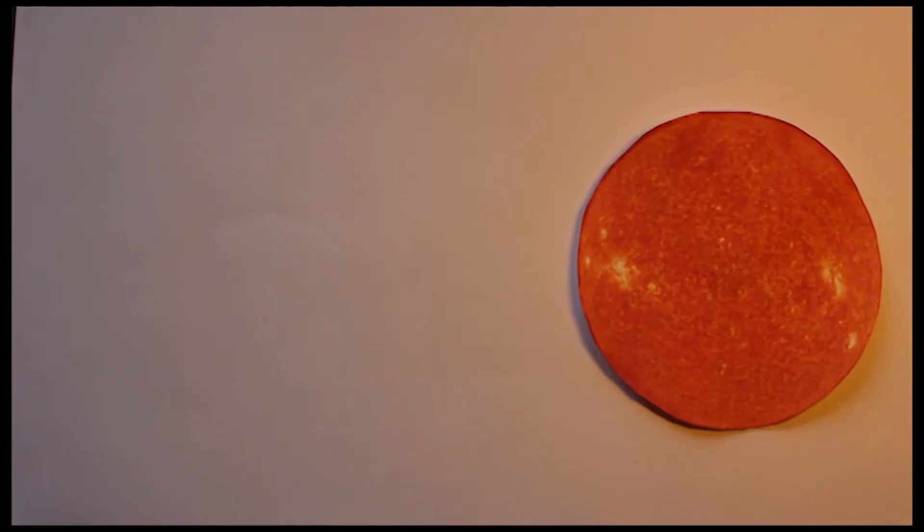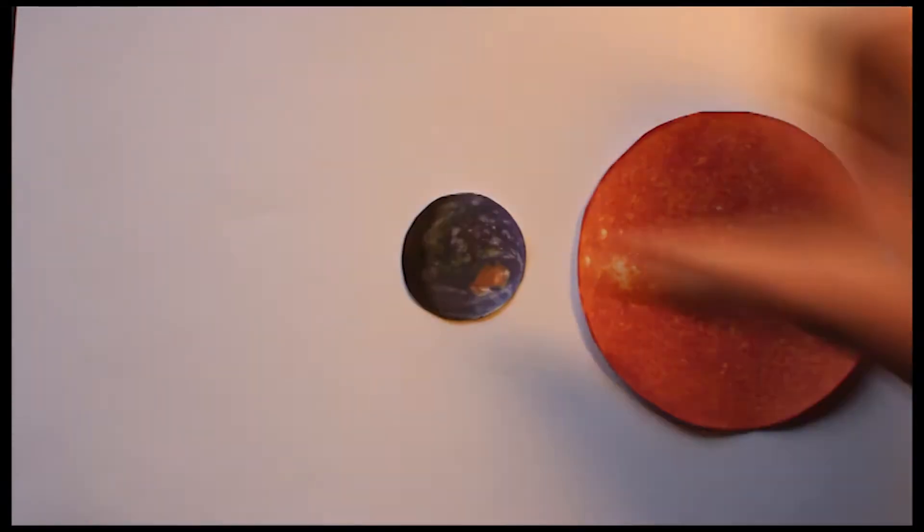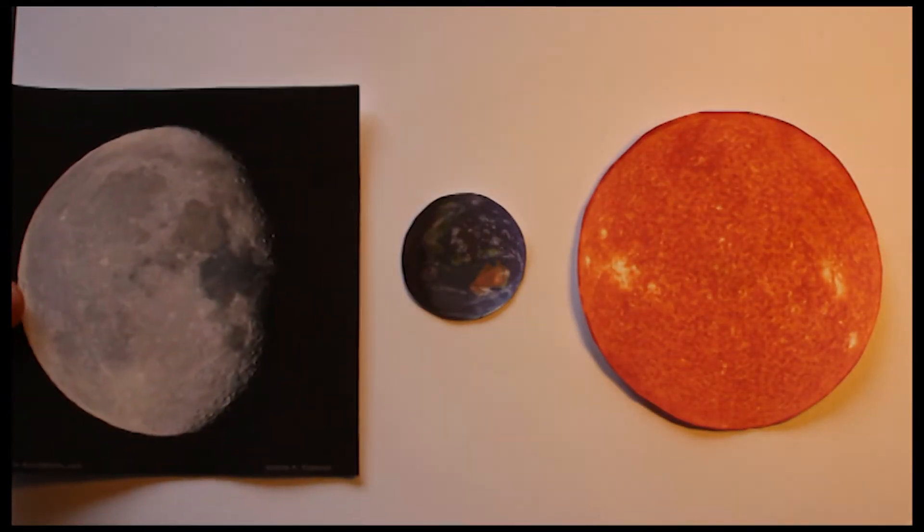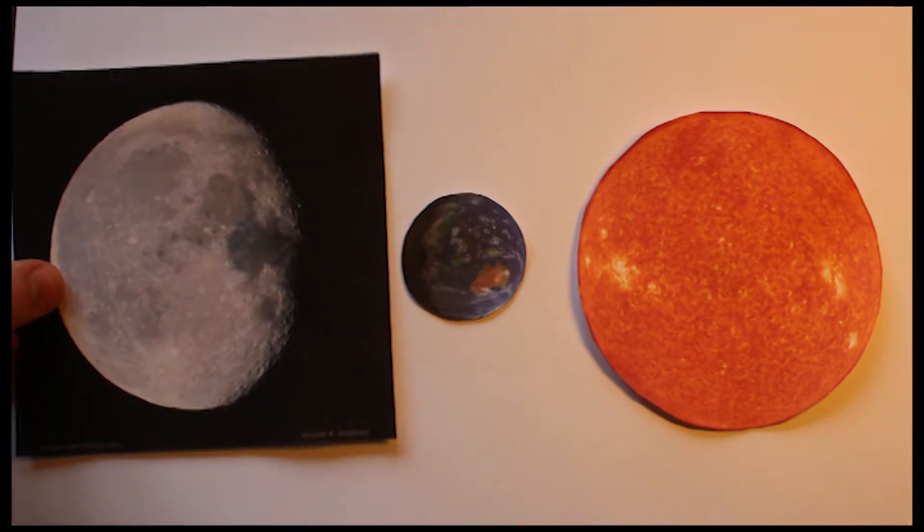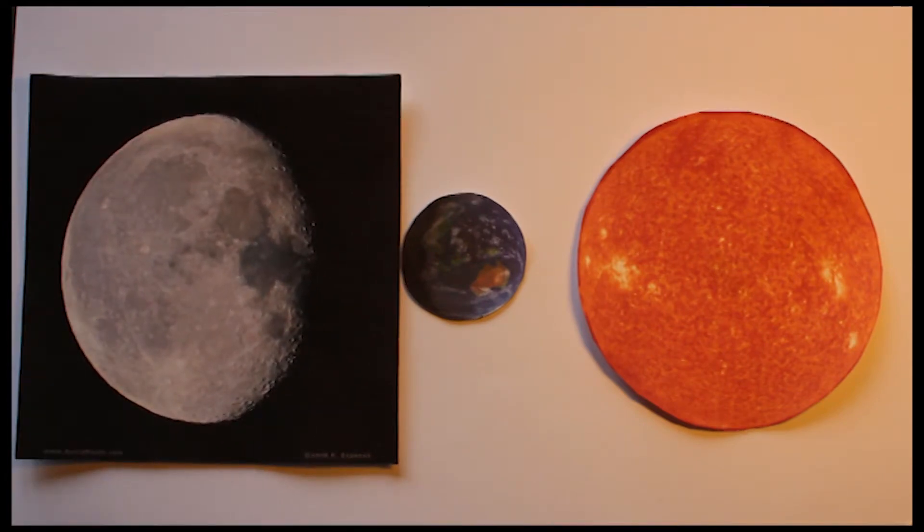A common misconception is that the Earth's shadow on the Moon causes the Moon's varying phases. But we only have to look at this image to realize that that can't be true. Unless the Earth is shaped like a banana.